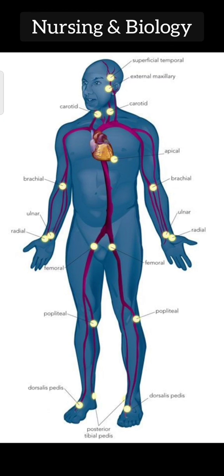These are the pulse points: apical, brachial, ulnar, radial, femoral, popliteal, dorsalis pedis, and posterior tibial pedis. Thank you.